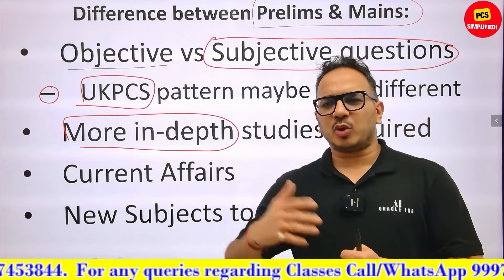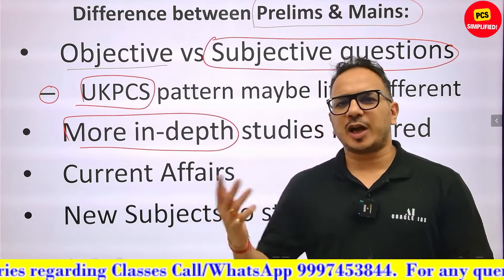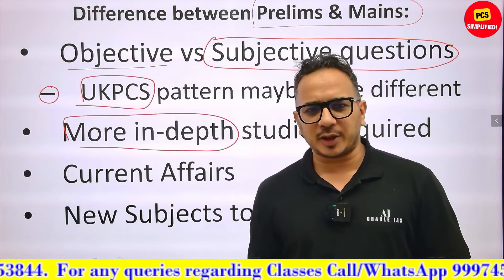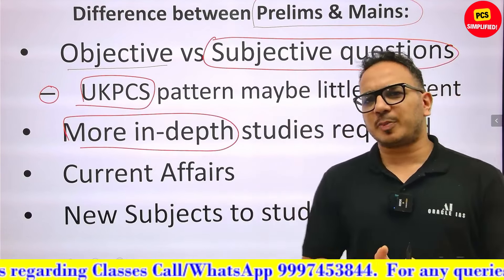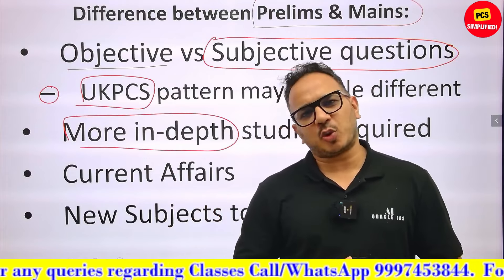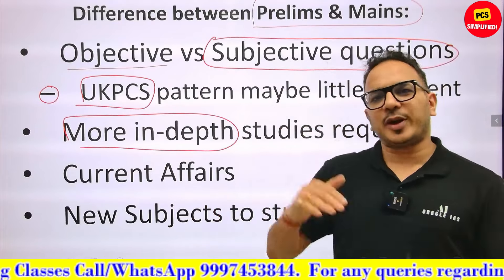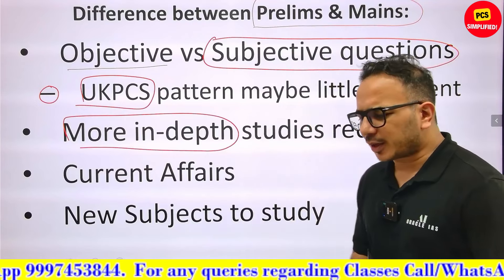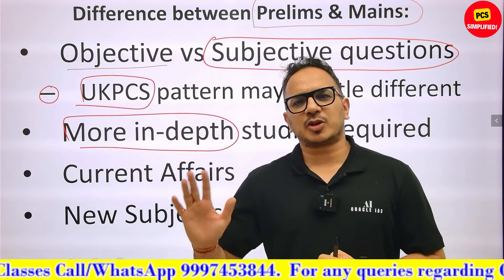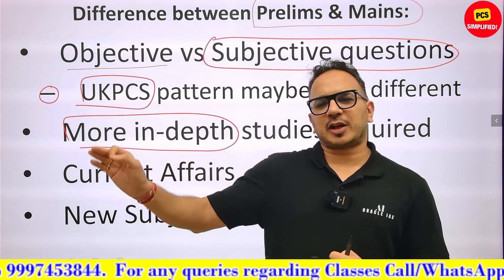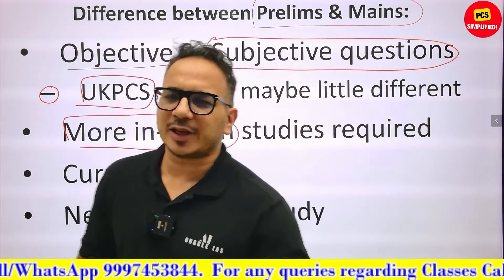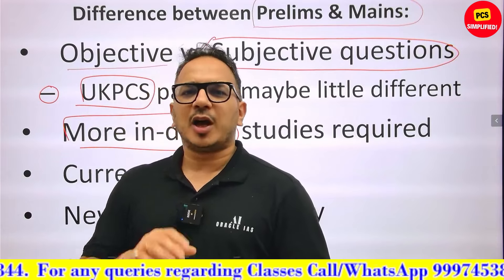For example, in Paper 1, a history question could be: 'What were the reasons for the downfall of the Mughal Empire?' Even though the question is straightforward, it's subjective — you need to know all the points. Similarly for polity, you can expect: 'What is the composition of the Finance Commission?' or 'Analyze the recommendations of the 15th Finance Commission.' We will discuss each subject's specific strategy and books in later videos.